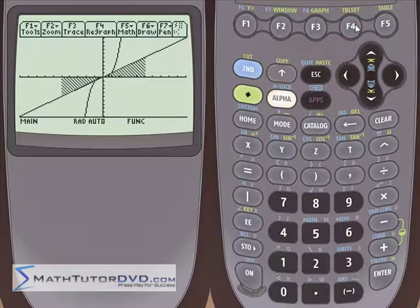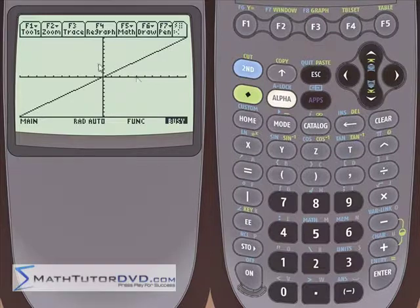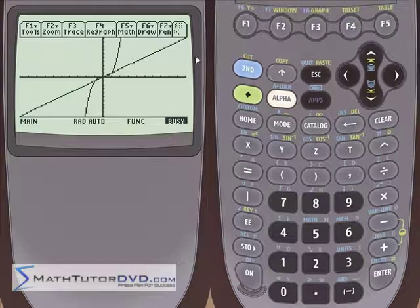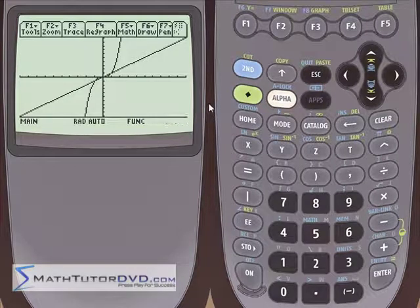Just hit F4 to redraw the entire screen. It'll force it to graph both functions again and remove any and all shading that you put on the screen. So we have this guy here.